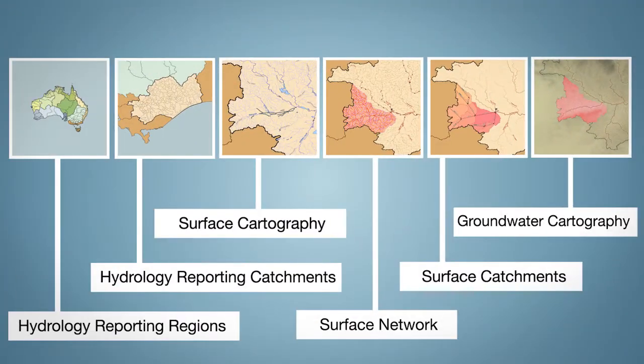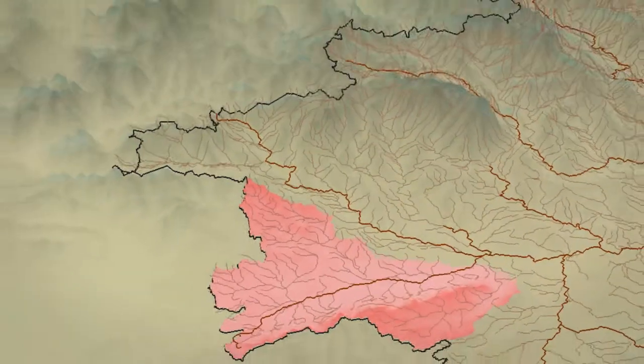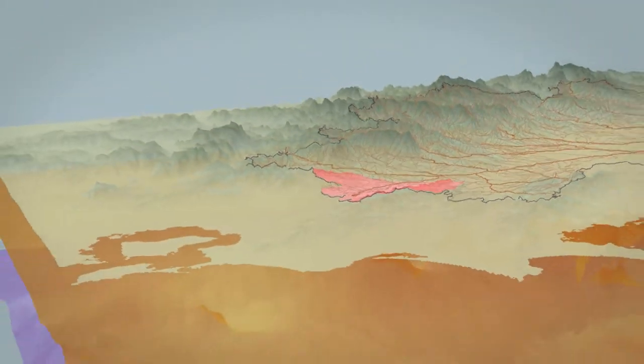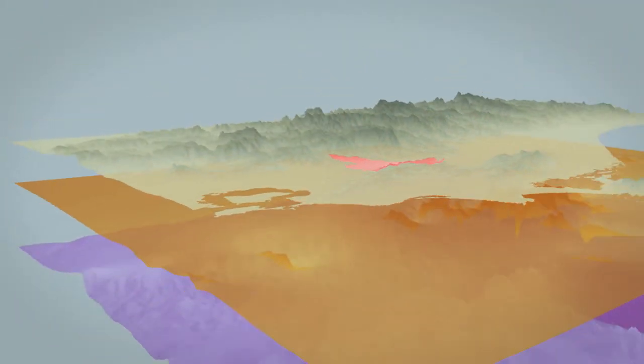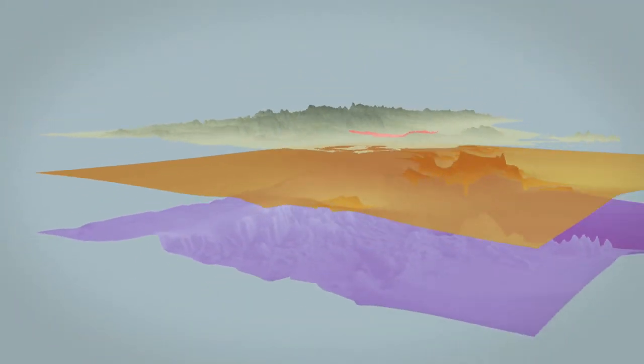Groundwater cartography shows groundwater resources and their features such as salinity, as well as the rocks and sediments at different levels below the surface.